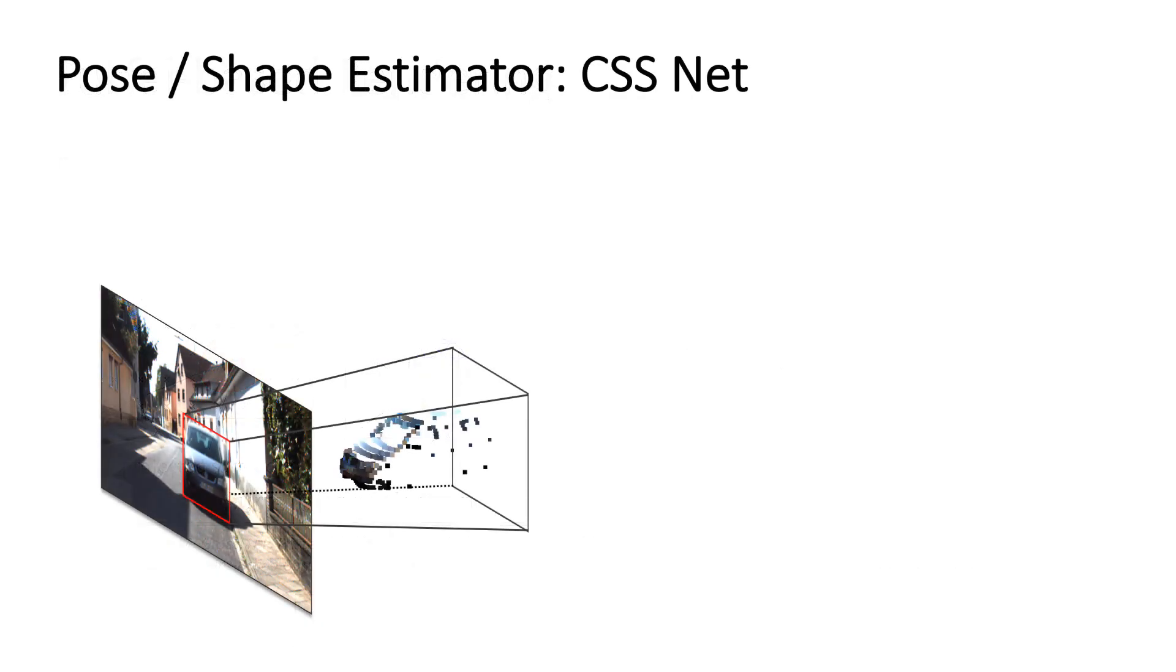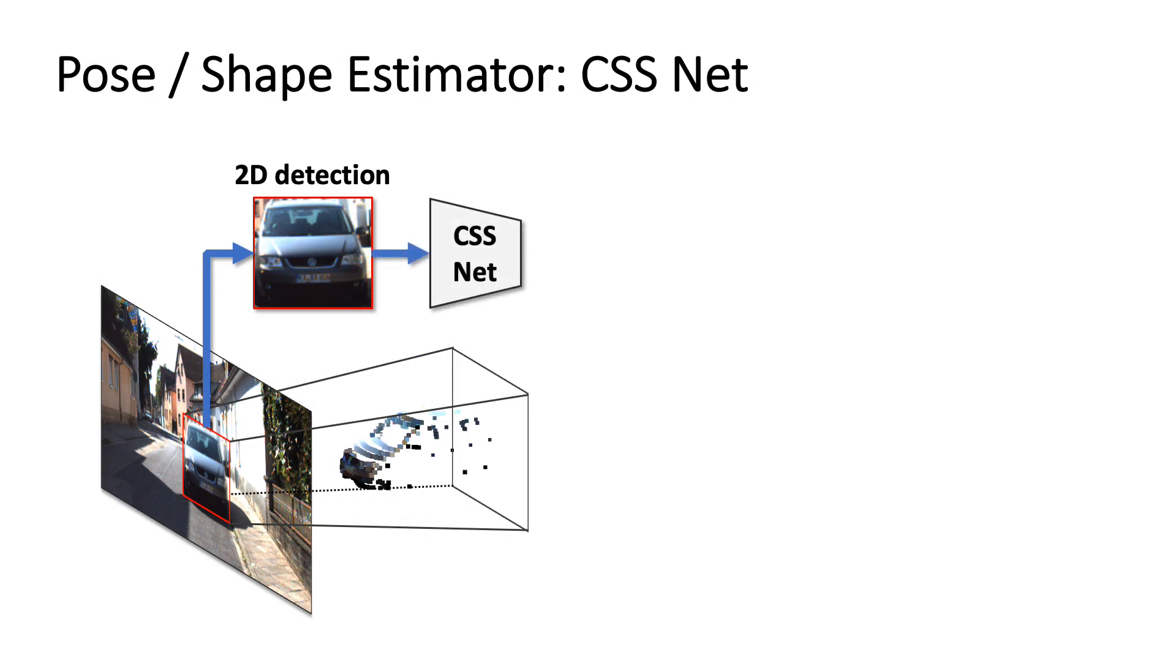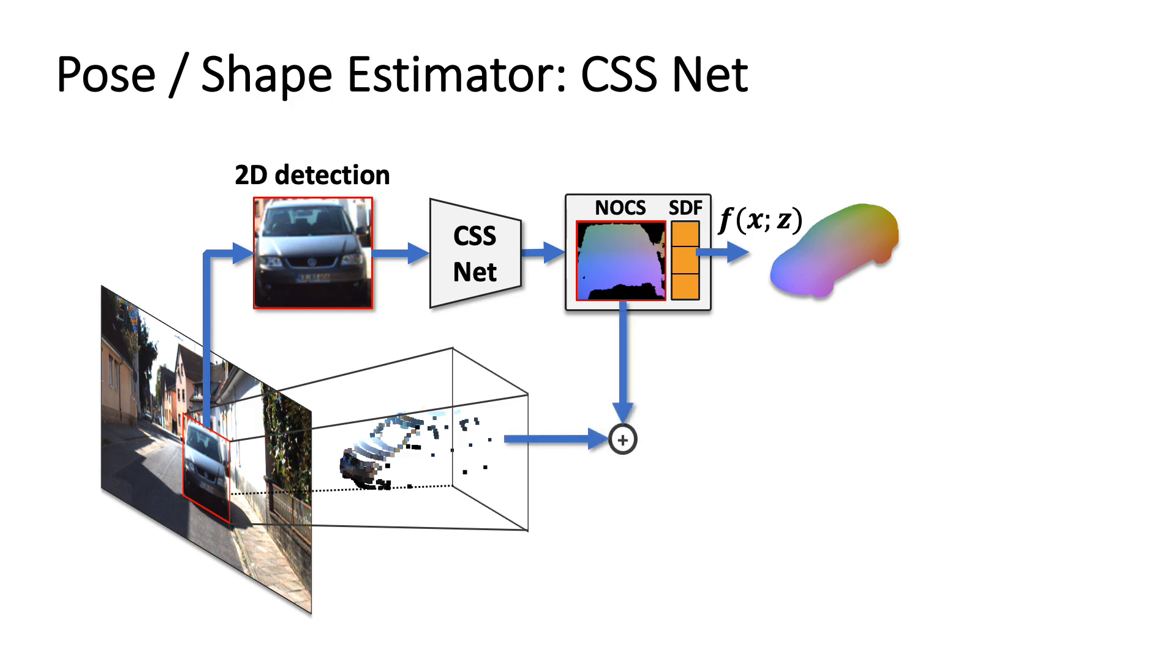We introduce the coordinate shape-space network to regress initial pose and shape estimates. Off-the-shelf 2D detections are fed into our CSS network to predict normalized surface coordinates or NOCs and an SDF latent factor used to recover the object shape. We back-project the coordinates to lie in the camera frame and then establish 3D-3D correspondences between the scene and model to estimate an initial pose transformation.